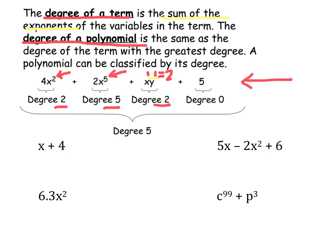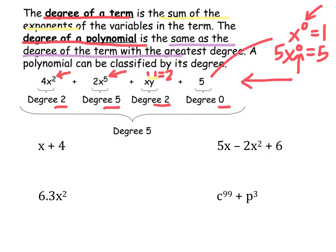And lastly, 5 is a constant that has degree 0. You might think of that as 5x to the 0 power equals 5 times 1, or 5 — so that's degree 0. I found the degree of all four terms in my polynomial, and now I want to find the degree of the polynomial. The degree of the polynomial is the same as the degree of the term with the greatest degree. Which term has the greatest degree? That is 5. So the polynomial has degree 5.